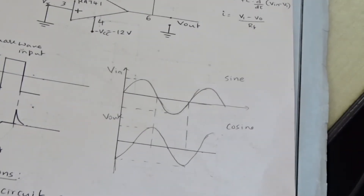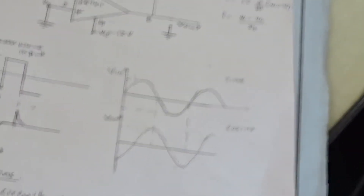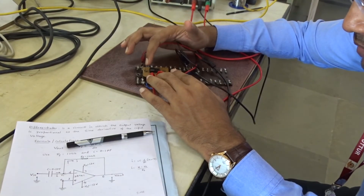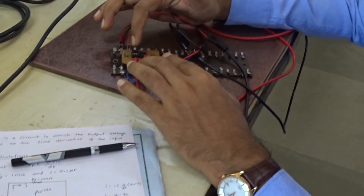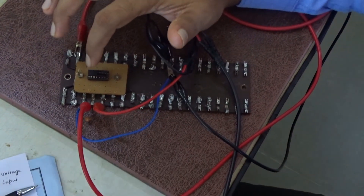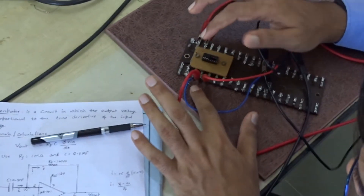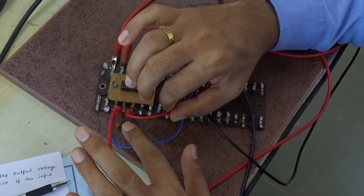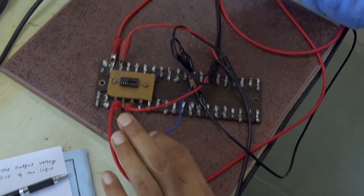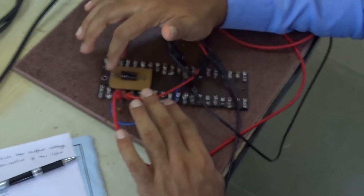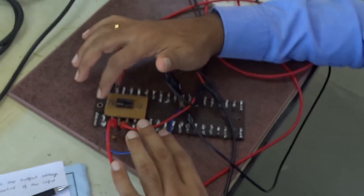Now I will show the output of the differentiator circuit. This is the op-amp IC used here. The pin numbering is: pins 1, 2, 3, 4 on one side and pins 8, 7, 6, 5 on the other. Pin number 2 is the inverting input, and one capacitor is connected to pin number 2 — the other end of the capacitor connects to the input voltage. The feedback resistance RF (1 megaohm) is connected between pin number 6 and pin number 2.